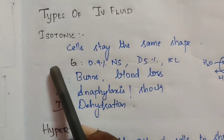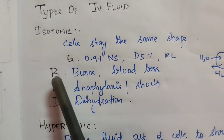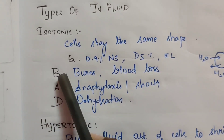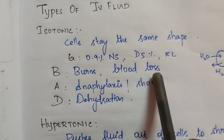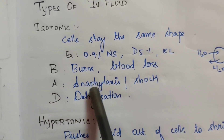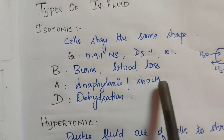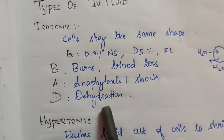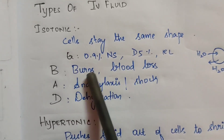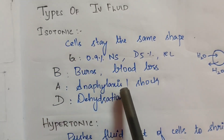For isotonic solutions, the acronym is BAD. B is for burns and blood loss. A is for anaphylaxis — a severe allergic reaction — or shock. D is for dehydration. In these cases, we will use isotonic solution.